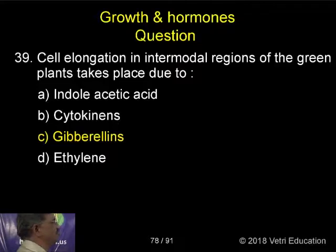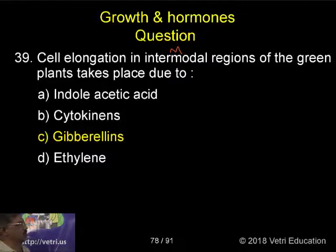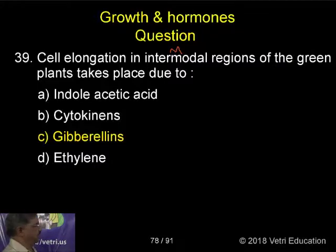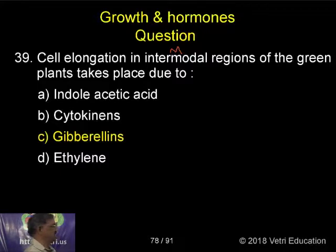Cell elongation in internodal regions of green plants takes place due to: a) indolacetic acid, b) cytokinins, c) gibberellins, d) ethylene.